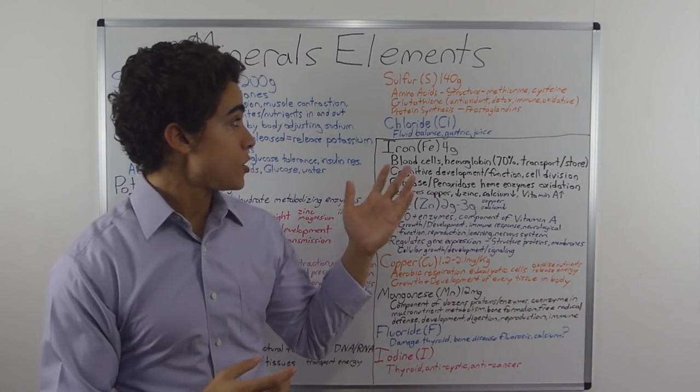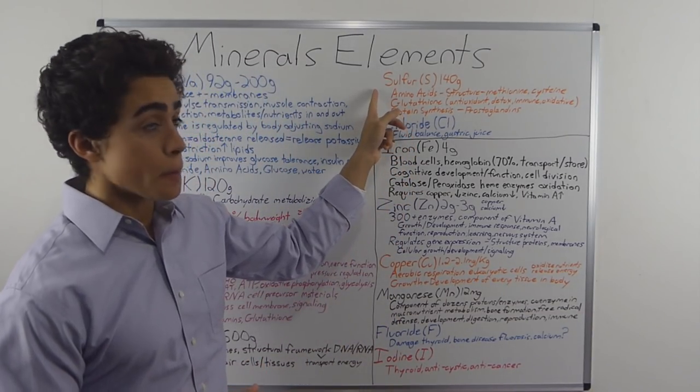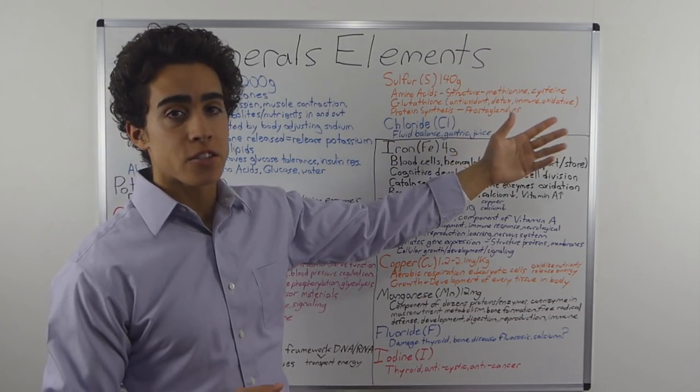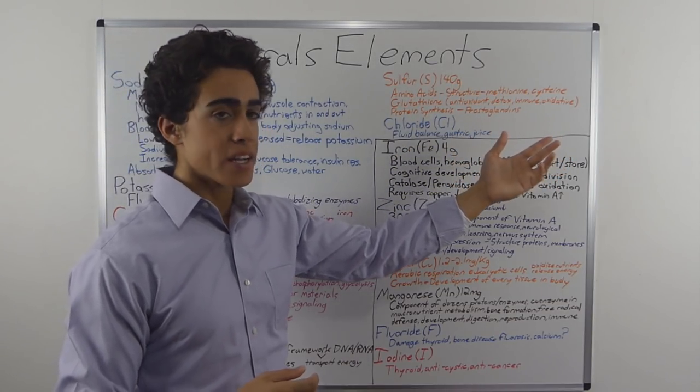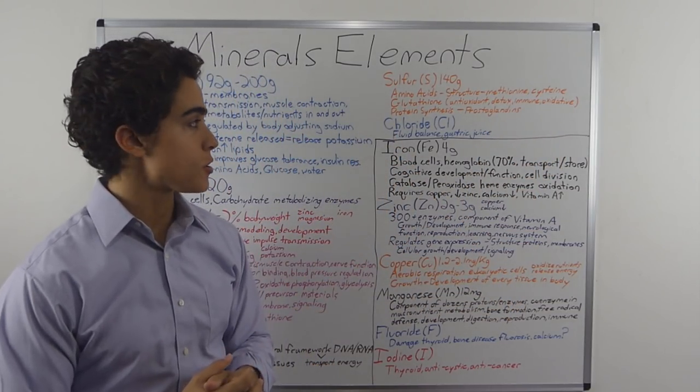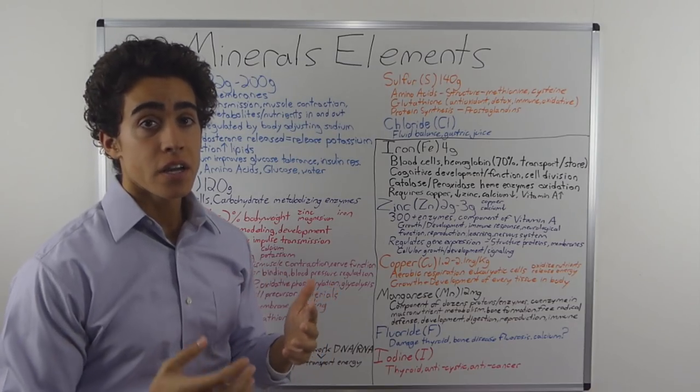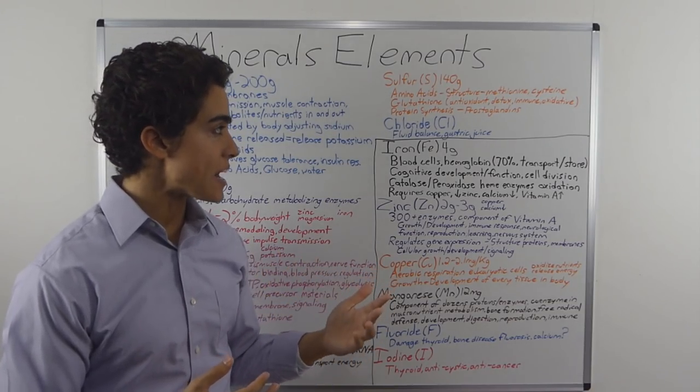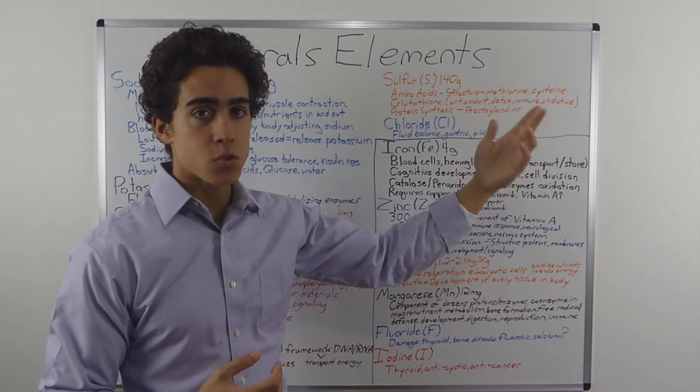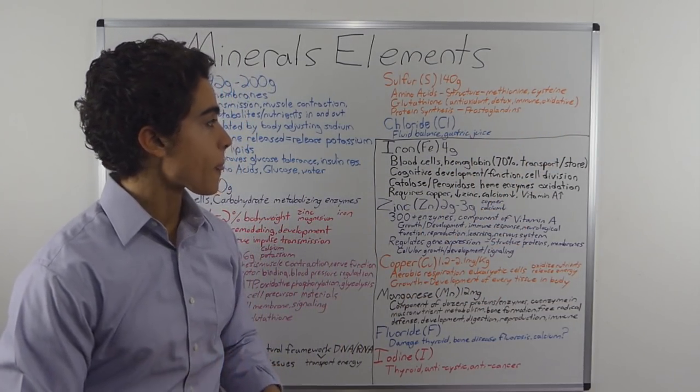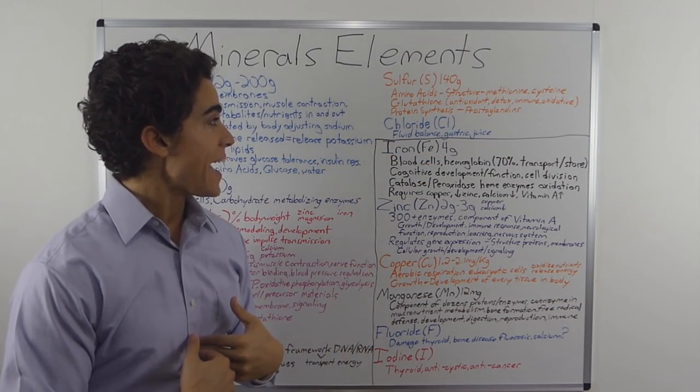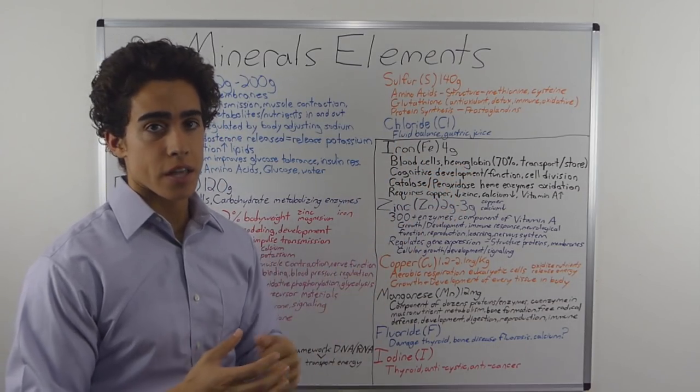Moving on to sulfur. Sulfur is contained in amino acids, therefore is an integral part of their structure. We obtain sulfur in our diets from the amino acids methionine and cysteine. The main function of sulfur is in glutathione. Glutathione is the chief antioxidant in the body, very important for detoxing, immune system health, as well as eliminating oxidative stress.